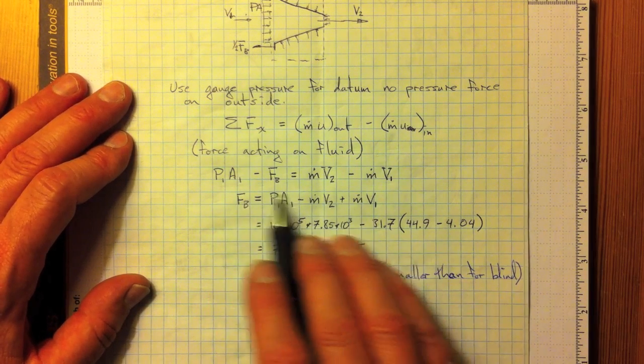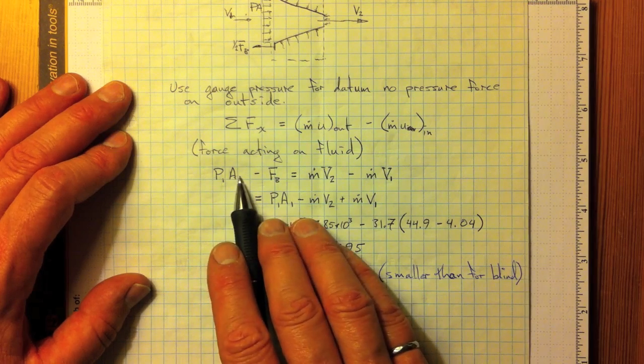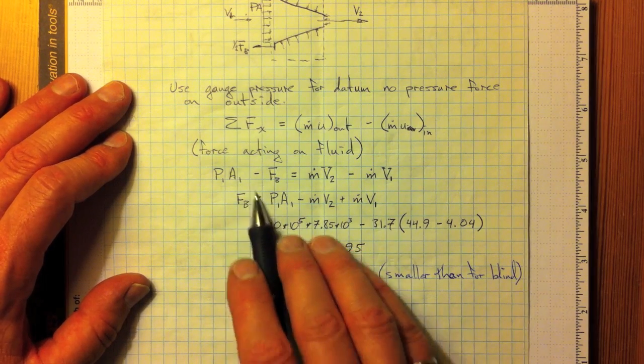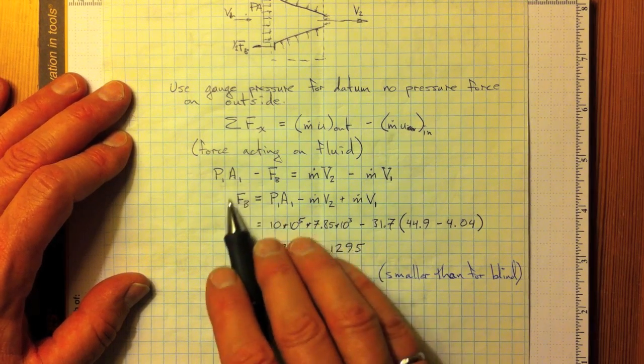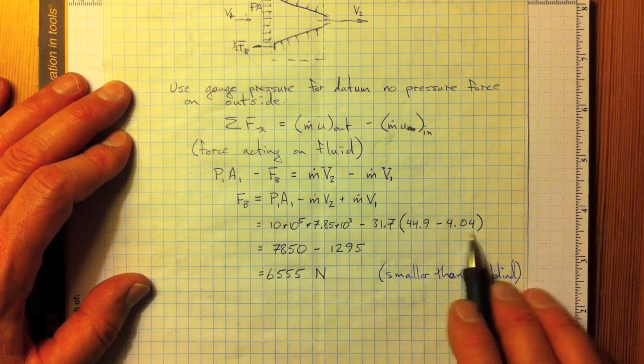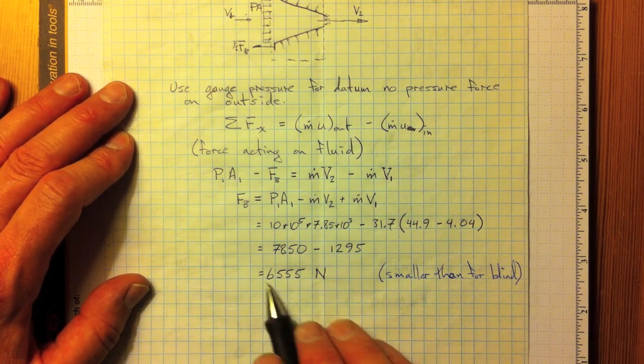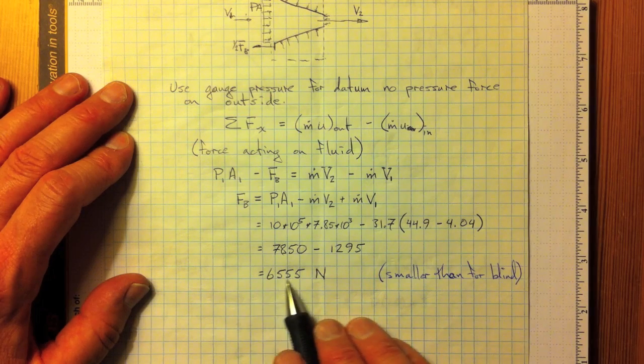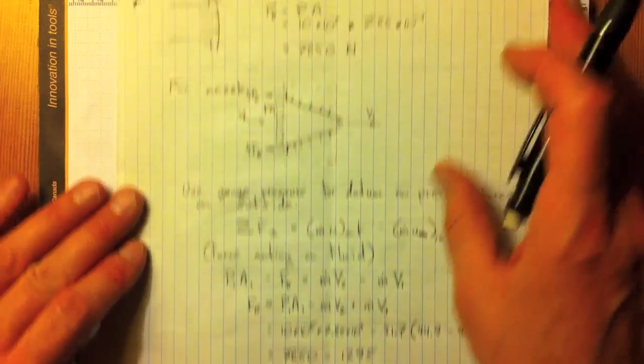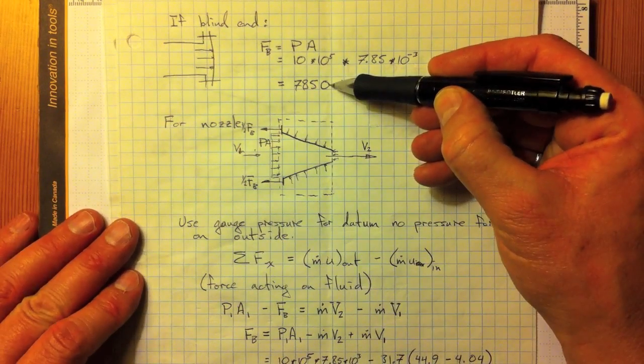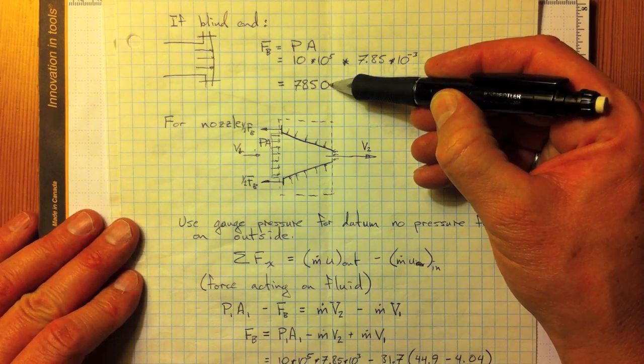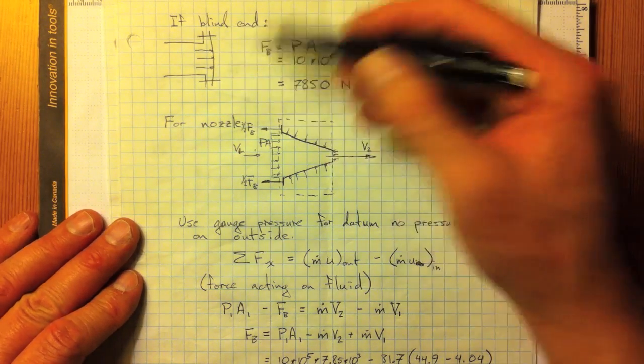And, if we take all of those, we know what the pressure is, 10 bar, we know what the area is, we can take that to the other side, the only unknown is the bolting force. We can calculate that bolting force, substituting in, and we find that it's 6555 newtons, a little bit lower than the 7850 that we'd have if we had a blind flange across the end of that pipe.